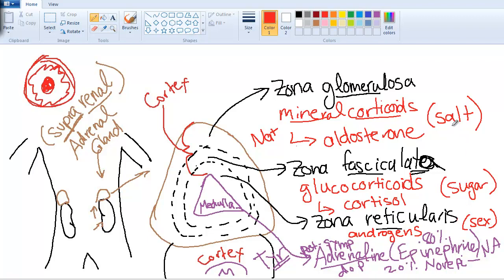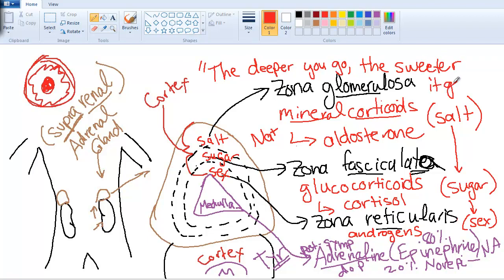So if you look here, we're going from the outside: salt, down to sugar, and sex hormones. So we have salt, then sugar, then sex hormones. Here's a very popular mnemonic that a lot of people like: the deeper you go, the sweeter it gets. You can see why a lot of people like that one. You're going from salt to sugar to sex.